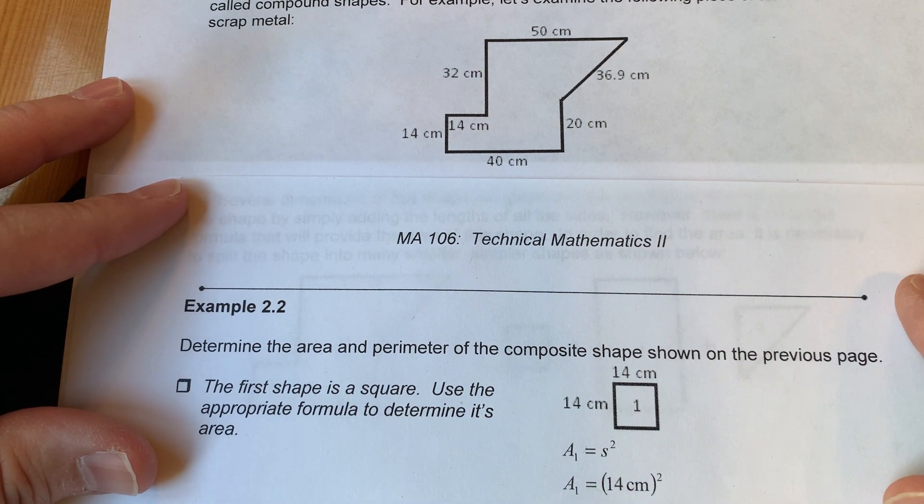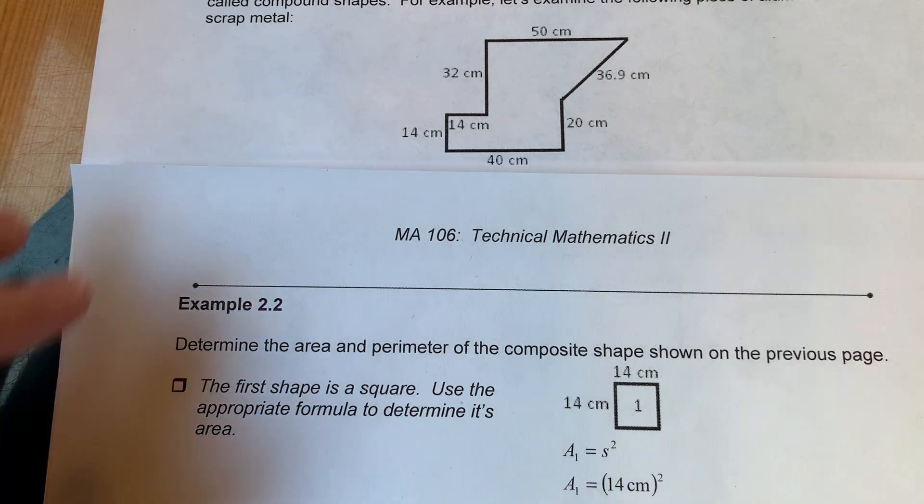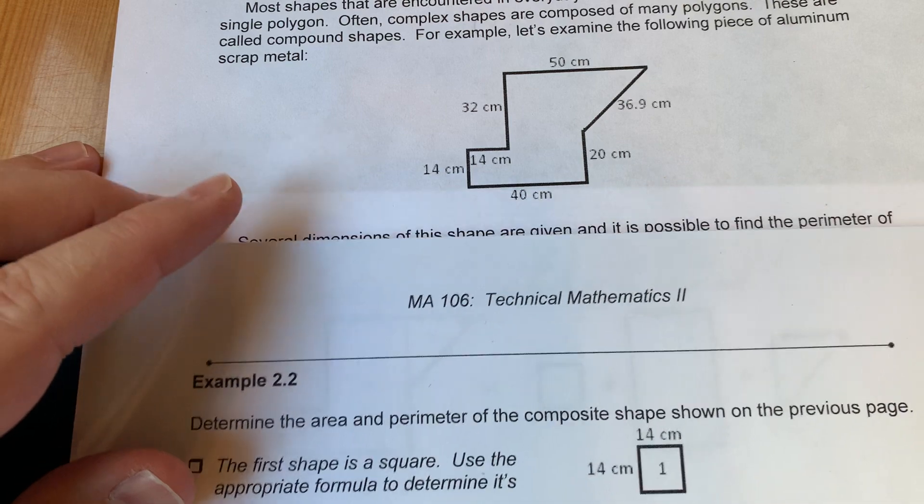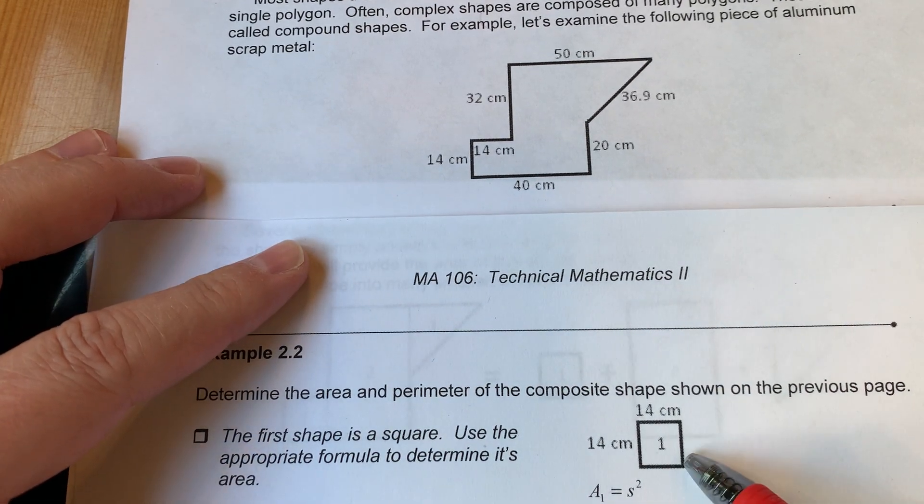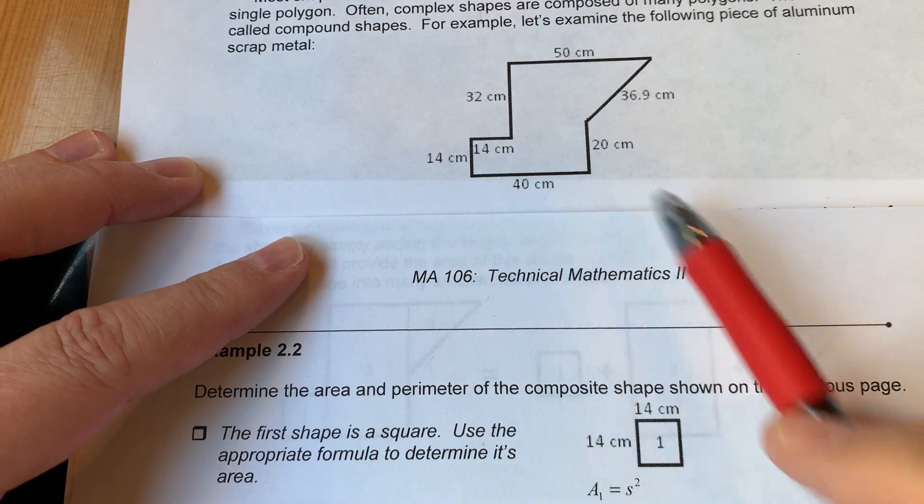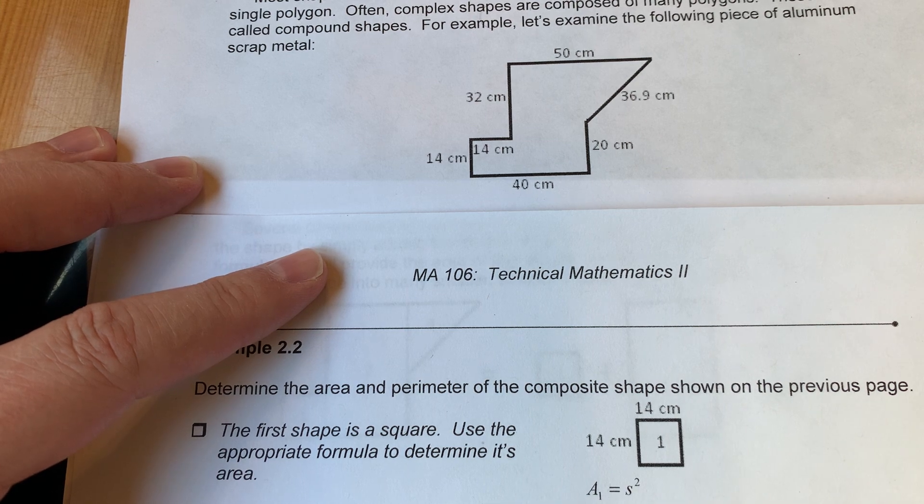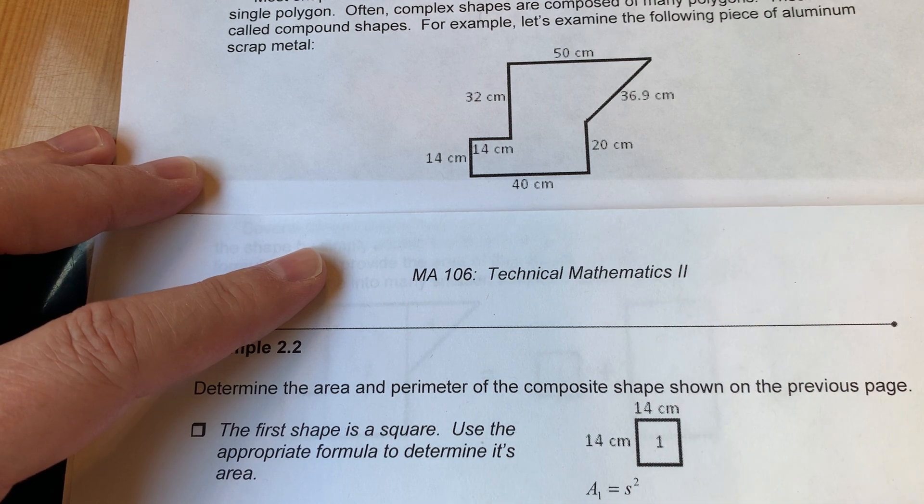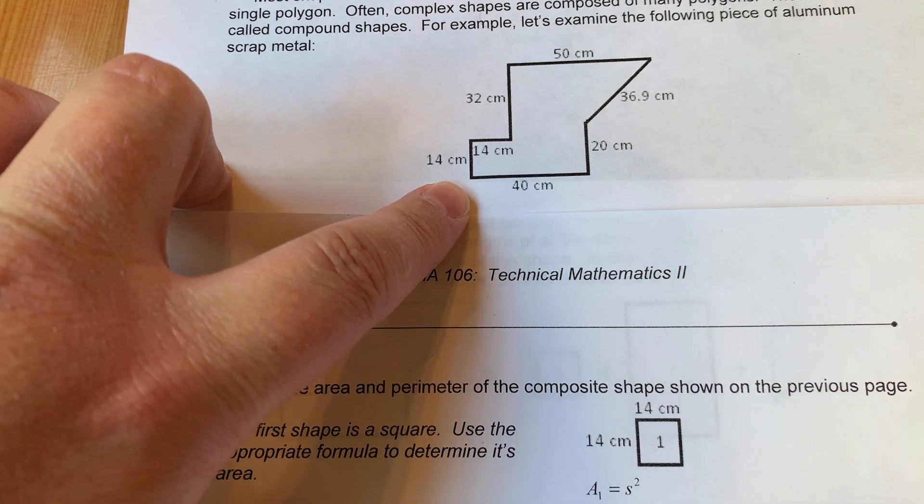We have this square, 14 by 14, that's the square here down in the corner. Obviously the area there is just going to be 14 times 14, which is 196. Everything here is in centimeters, so that's going to be 196 squared centimeters.